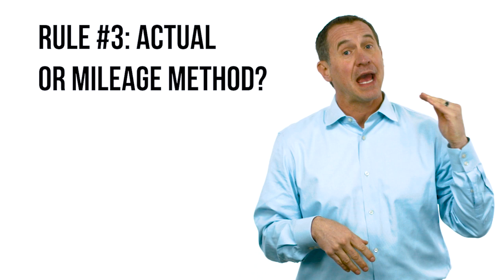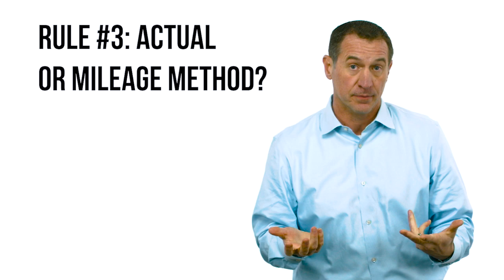Now once we know that we have a business and we've got a vehicle that we're using for business, we're tracking it. Number three: we have got to choose between actual or mileage. Now these are two different methods to be used for writing off a vehicle, and once you choose a method, you're stuck with that method for that car as long as you own it.